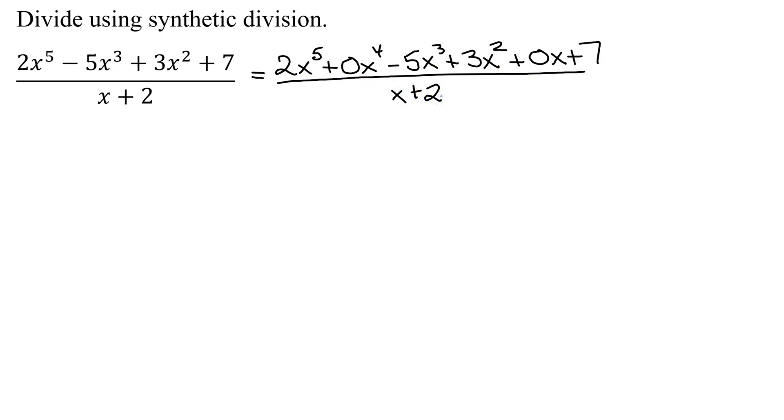So now I'm ready to set up my synthetic division. I'm going to write it down here. I need to put a number in the box, and remember that number is not plus 2, it is minus 2. This is the zero that goes with x plus 2. So if you set x plus 2 equal to zero, subtract 2 from both sides, you get x equals negative 2.